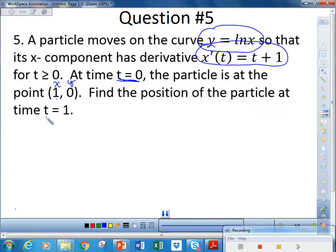And we want to find the position of the particle at t equals 1. So, what we're trying to find is the position vector. So that would be x of t, y of t.